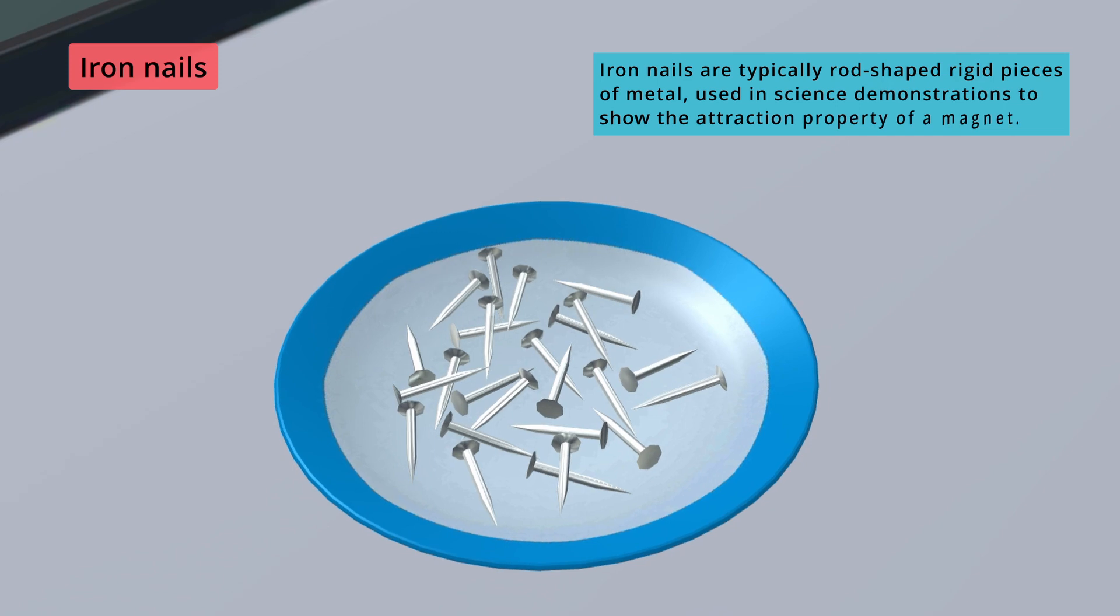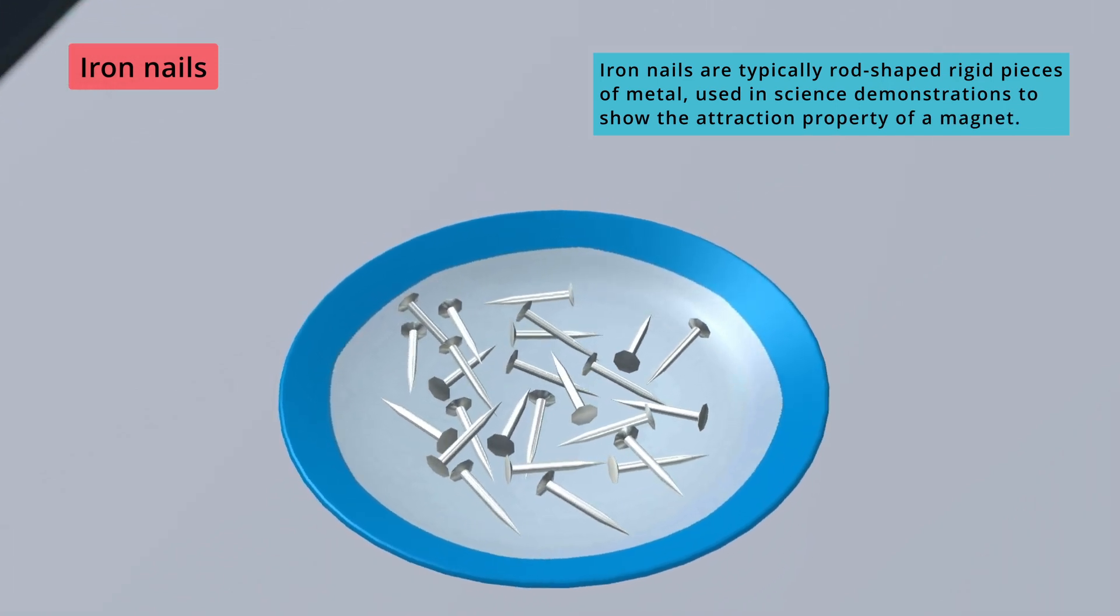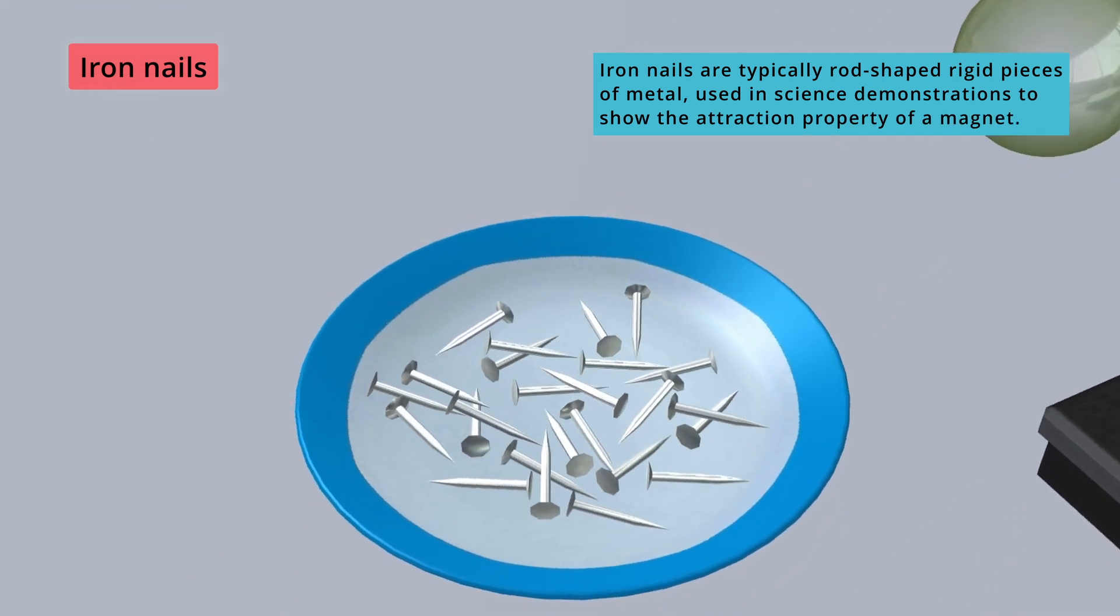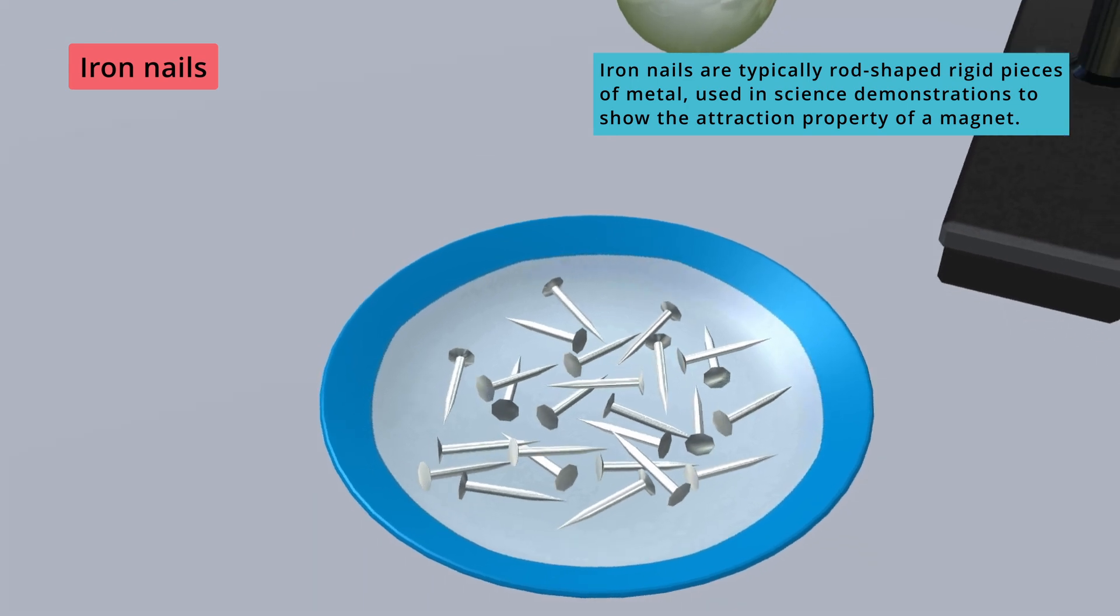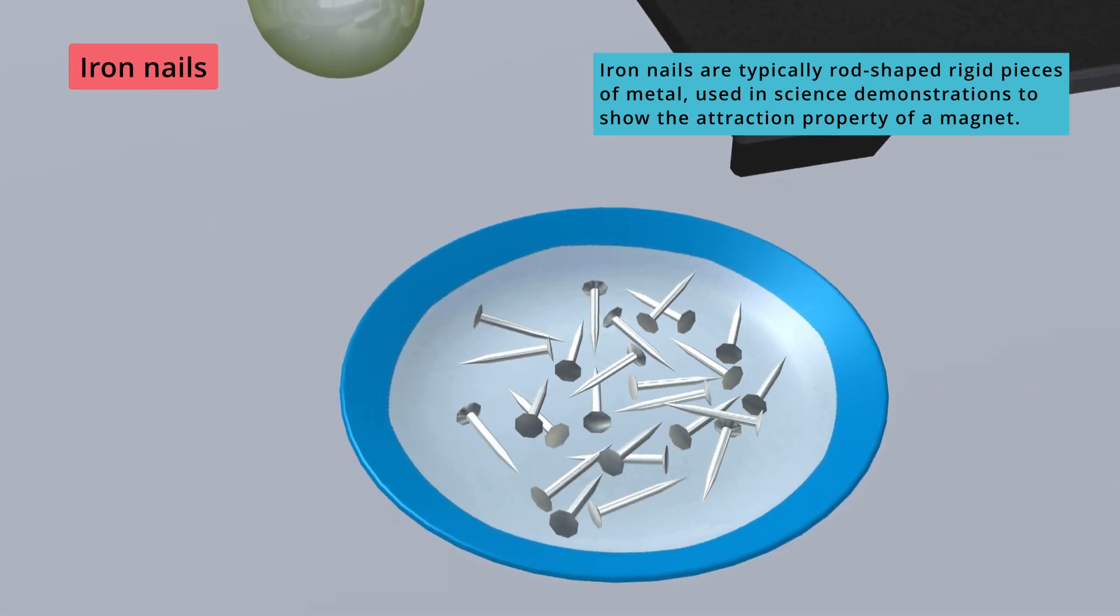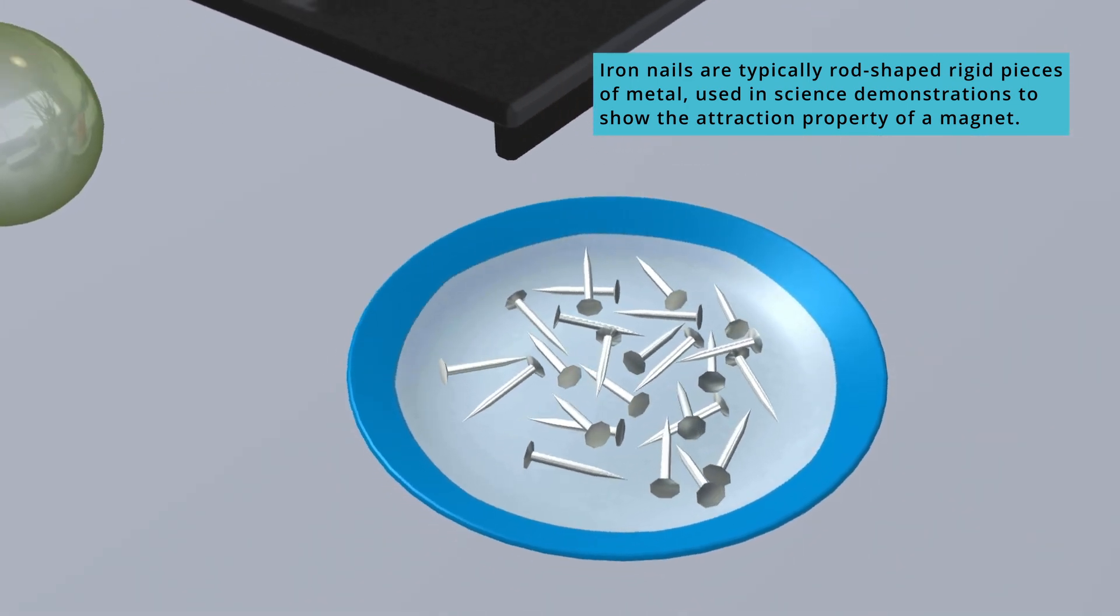Iron nails are typically rod-shaped rigid pieces of metal used in science demonstrations to show the attraction property of a magnet.